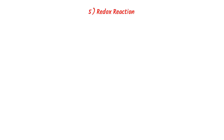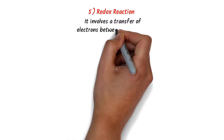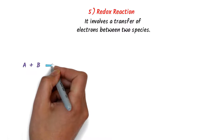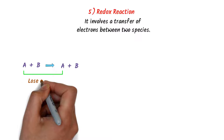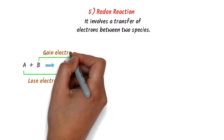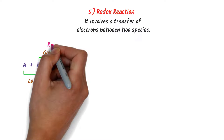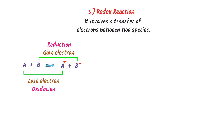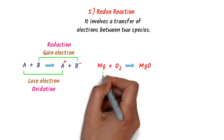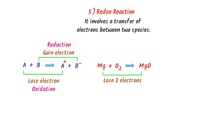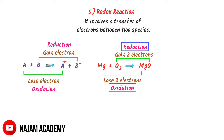Fifthly, redox reaction. A redox reaction involves a transfer of electrons between two species. A loses an electron to form a positive ion, and B gains an electron to form a negative ion — so A is oxidized and B is reduced. For example, when magnesium plus oxygen gas react together, they form magnesium oxide. Here, magnesium loses two electrons and is oxidized, while oxygen gains two electrons and is reduced. That's why we call it a redox chemical reaction.